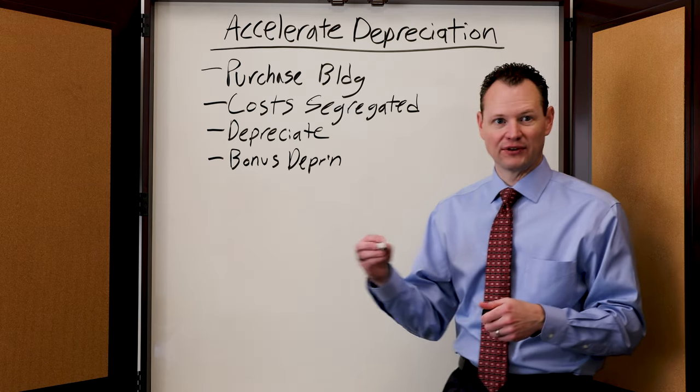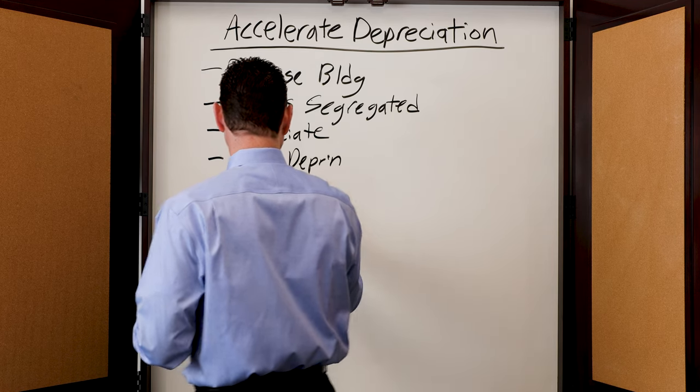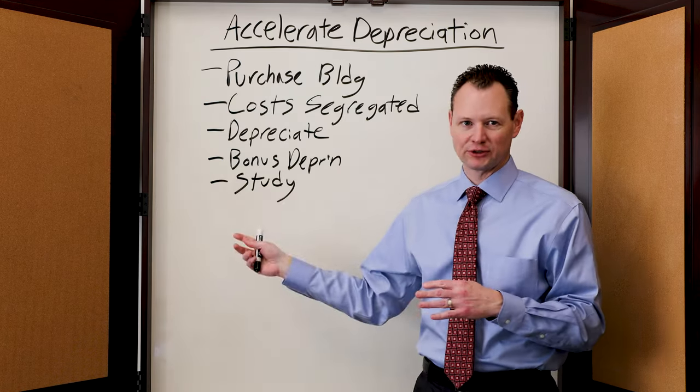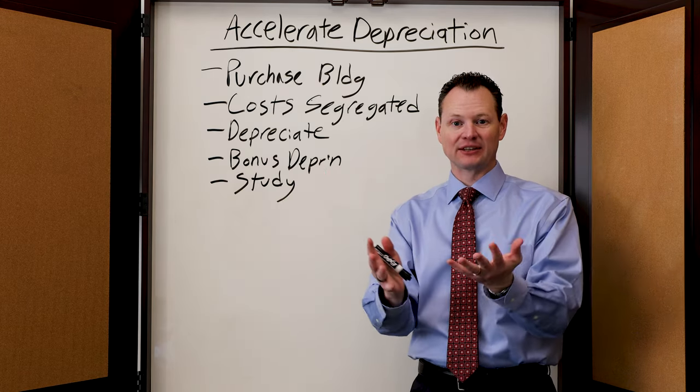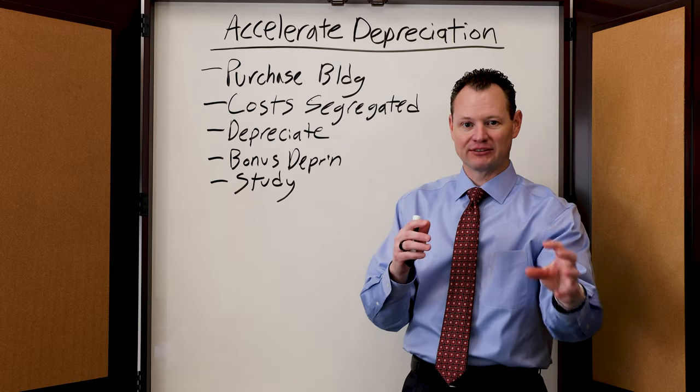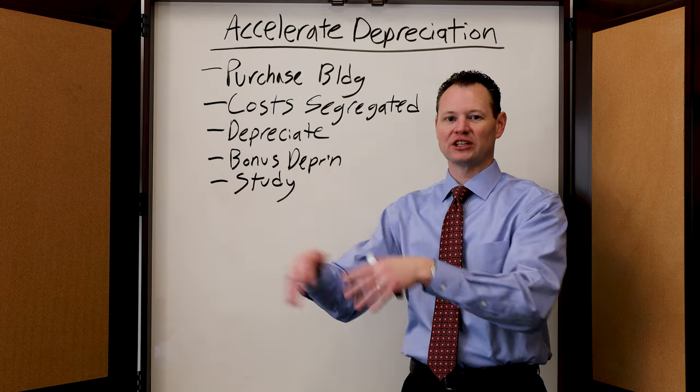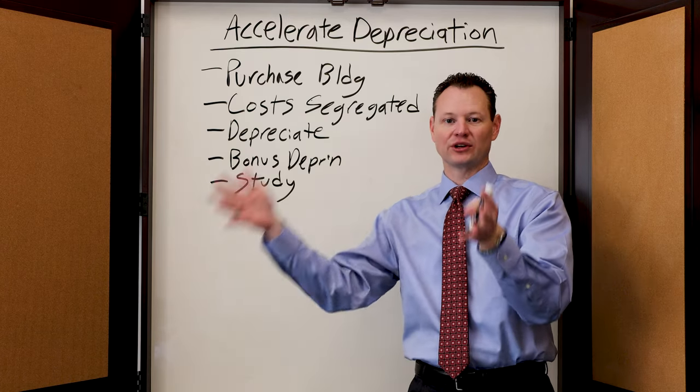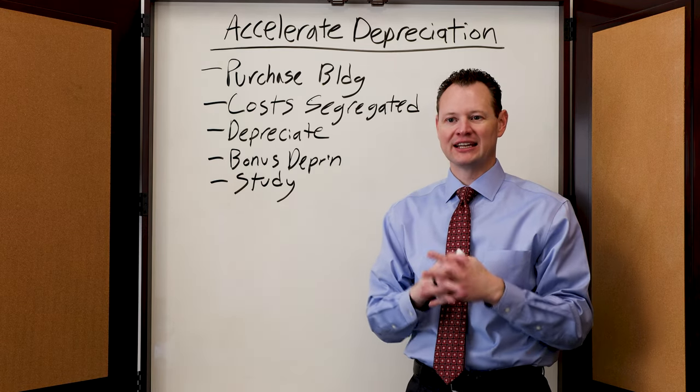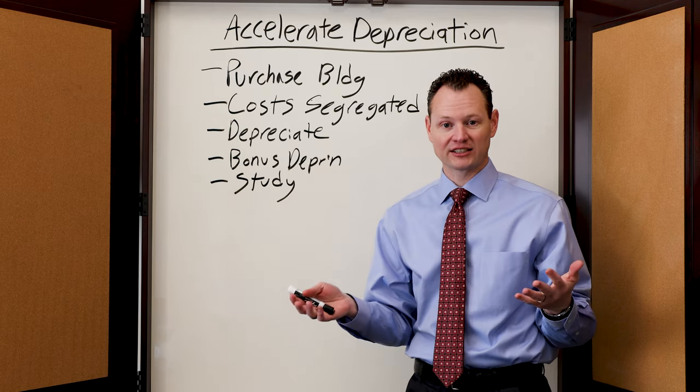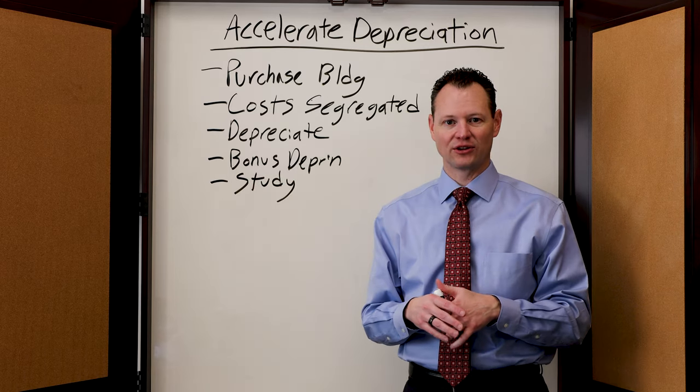The final piece of the cost segregation is to get a study done. These studies are typically done by specialty firms, done by engineers that come in and can dissect the building and can say, this portion of the building is five-year property, this portion is seven year, this portion is 15 year, and then the remaining portion is your 27 and a half year for residential or 39 year for commercial. It's very beneficial to have one of these firms come in, take a look, see if it's worth running a cost segregation study, and then if so, running that study and helping you to recognize all those benefits.